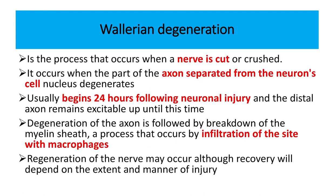Wallerian degeneration is a process that occurs when a nerve is cut or crushed — that means the nerve is destroyed. It occurs when part of the axon is separated from the neuronal cell body, causing the nucleus to degenerate. The axon is destroyed but the covering may or may not be affected. The process usually begins 24 hours following the neuronal injury, with 24 to 48 hours required to initiate the process, and it occurs usually distal to the injury site.